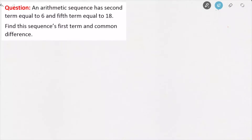When we're given this type of question, it's very important to take the time to pick up on what is given and what is being asked. We can see we're dealing with an arithmetic sequence, and we're told that the second term is equal to 6 and the fifth term is equal to 18. Those are the two things we are given — the two bits of information that we're going to have to use.